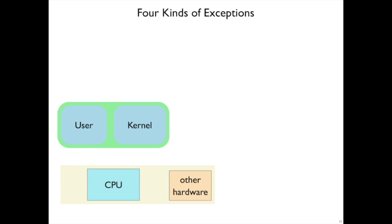Overall we're going to have four kinds of exceptions and three ways of handling things. Let's imagine that we have some user code alongside kernel code - both of them are running on the same CPU, in one set of instructions or the other at a time - and there's some other hardware out there like a clock, a network card, or a mouse.